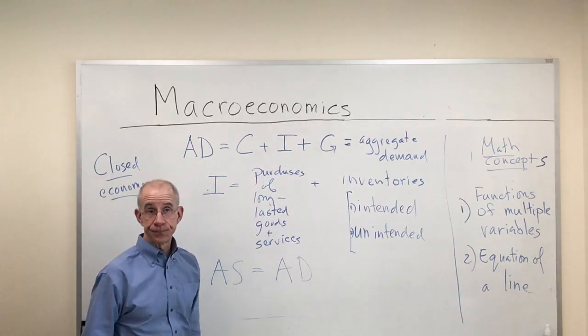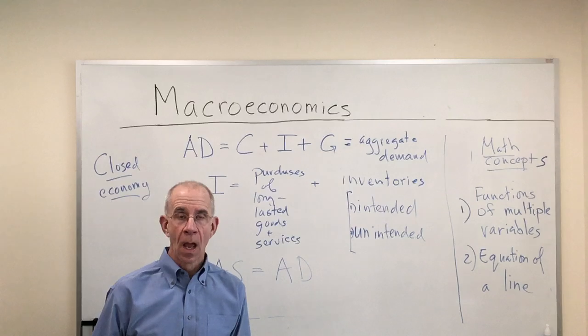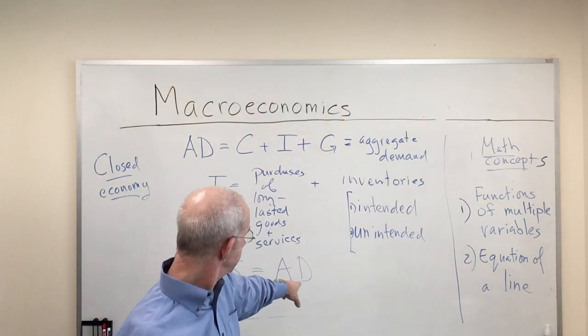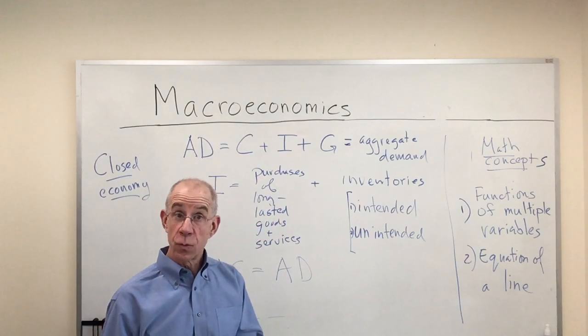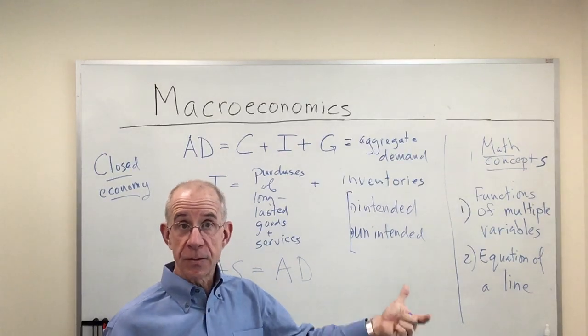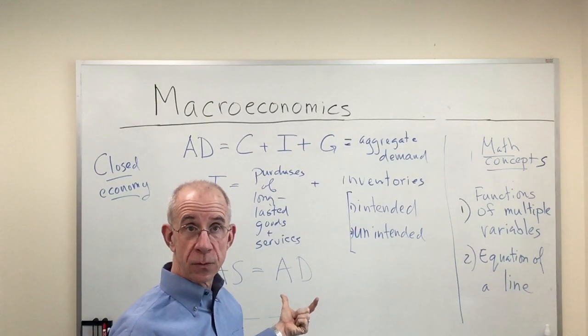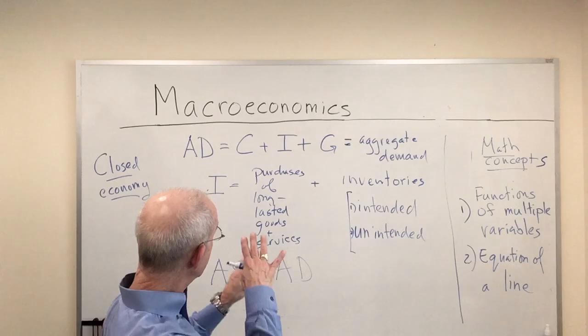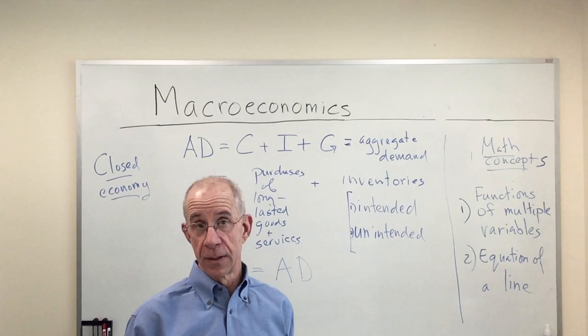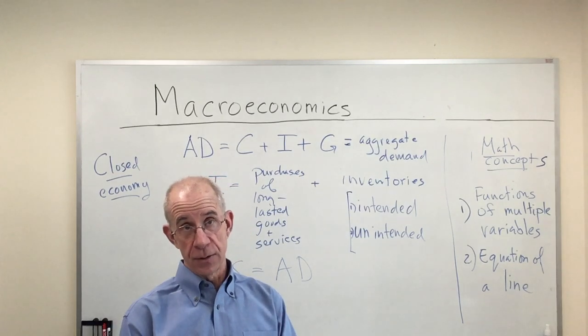that could have in it a series of unintended inventories, which reflects a recessionary situation. But we're still going to have aggregate supply equal to aggregate demand. So we'll use that in a number of different contexts to analyze the economic conditions of the country.